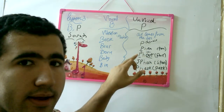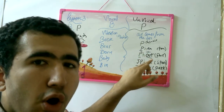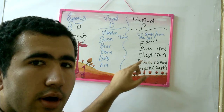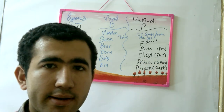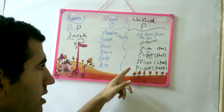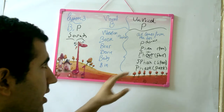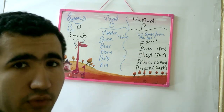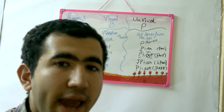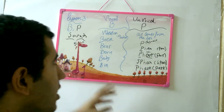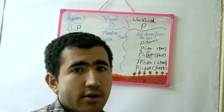Pen, pen. Poor, poor. Span, span. Park, park. This is the unvoiced sound — air comes from your lips. Pear, okay. P is an unvoiced sound.